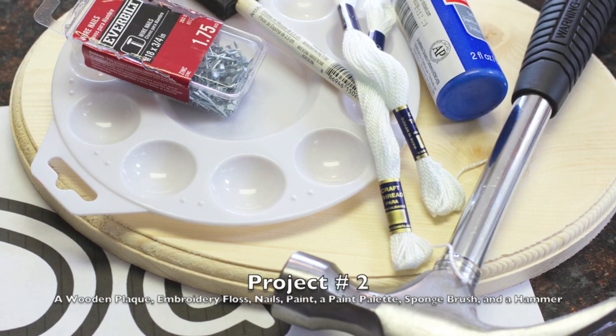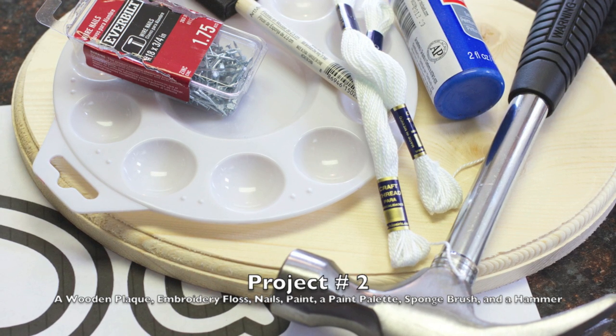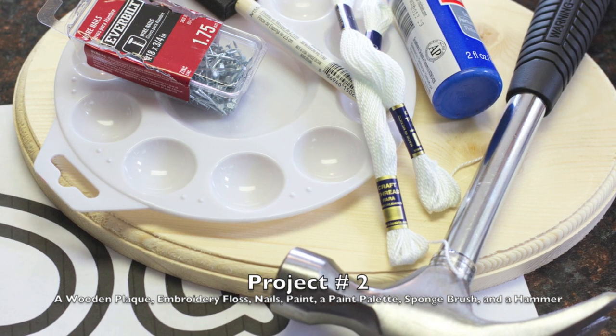For the second project, you'll need a wooden plaque, embroidery floss, nails, paint, a paint palette, a sponge brush, and a hammer.